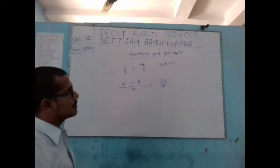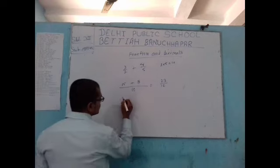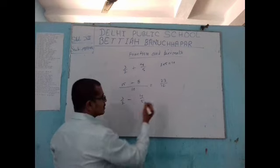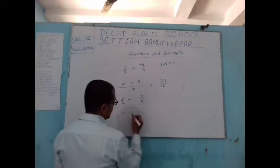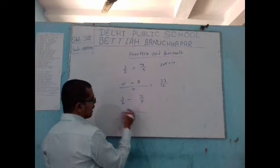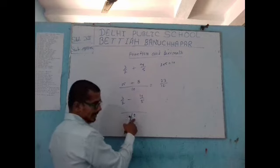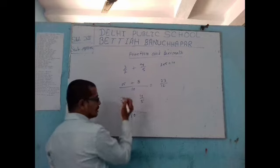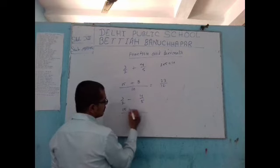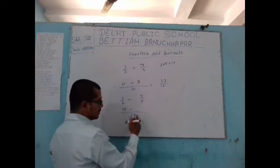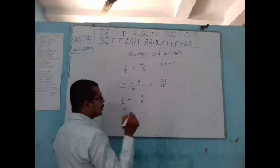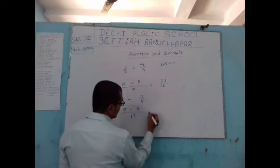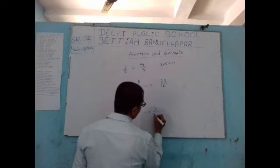To subtract 3 by 2 minus 4 by 5, we do the same thing. Take the LCM of 2 and 5, which is 10. Divide 10 by 2 to get 5, multiply by the numerator: 5 times 3 is 15. Divide 10 by 5 to get 2, multiply by the numerator: 2 times 4 is 8. So the answer is 15 minus 8 over 10, which equals 7 by 10.